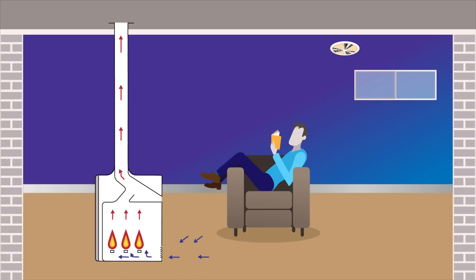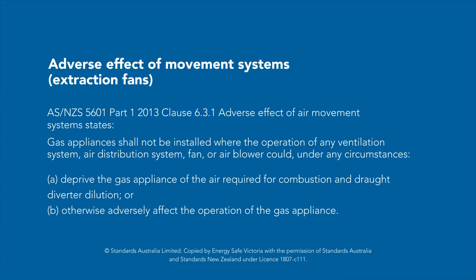If there is insufficient ventilation in the room or building, the installation is non-compliant and additional ventilation is required. AS NZS 5601 Part 1 2013 Clause 6.3.1 Adverse effect of air movement systems states gas appliances shall not be installed where the operation of any ventilation system, air distribution system, fan, or air blower could under any circumstances deprive the gas appliance of the air required for combustion and draft diverter dilution or otherwise adversely affect the operation of the gas appliance.